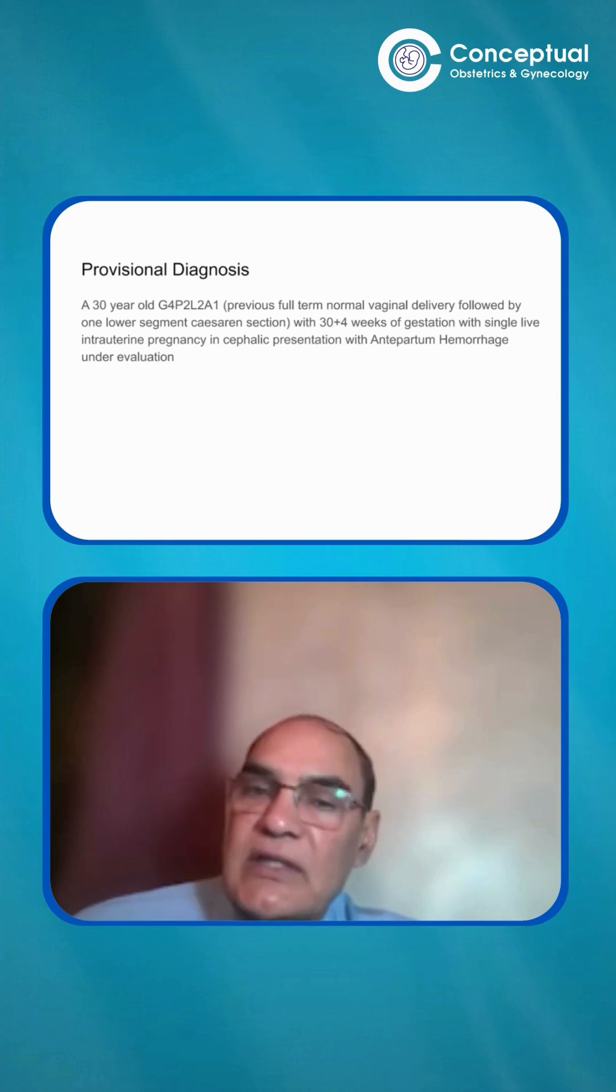And then apparently causeless. Patient was just like resting at that time when it happened. So again, in placenta previa, then any history of hypertension. There is no history of hypertension. So that goes into placenta previa. If there was history of hypertension, that goes in hypertension preeclampsia, that goes in favor of abruptio placenta.